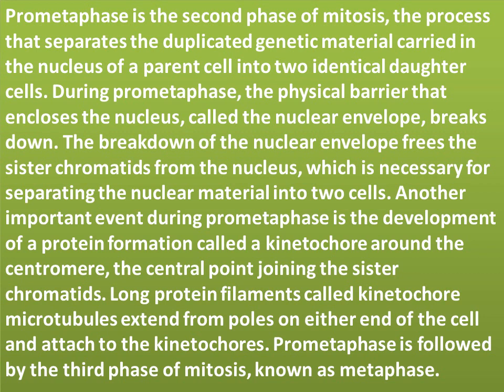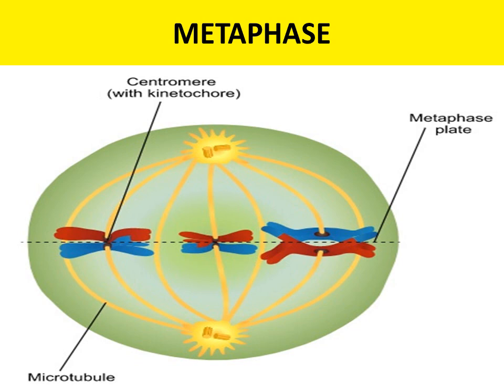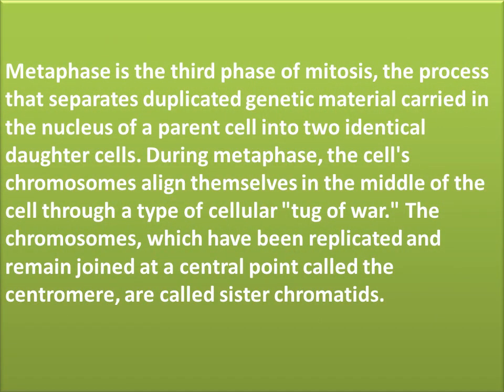Pro-metaphase is followed by the third phase of mitosis: metaphase. During metaphase, the cell's chromosomes align themselves in the middle of the cell through a type of cellular tug of war. The chromosomes, which have been replicated and remain joined at a central point called the centromere, are called sister chromatids.